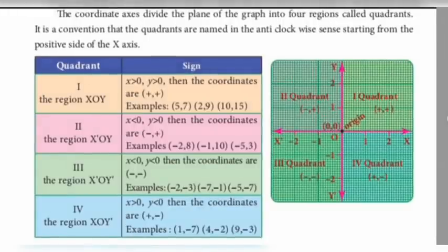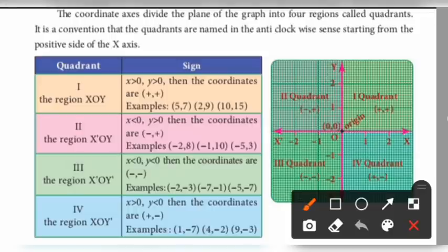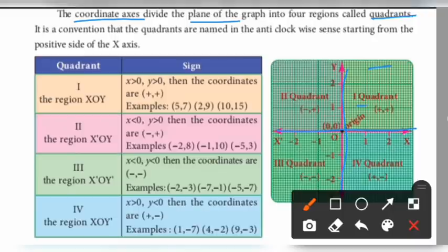Next is the quadrant. The coordinate axes divide the plane of the graph into 4 regions called quadrants. This is the y-coordinate axis and this is the x-coordinate axis. The plane is divided into four quadrants: 1st quadrant, 2nd quadrant, 3rd quadrant, and 4th quadrant.